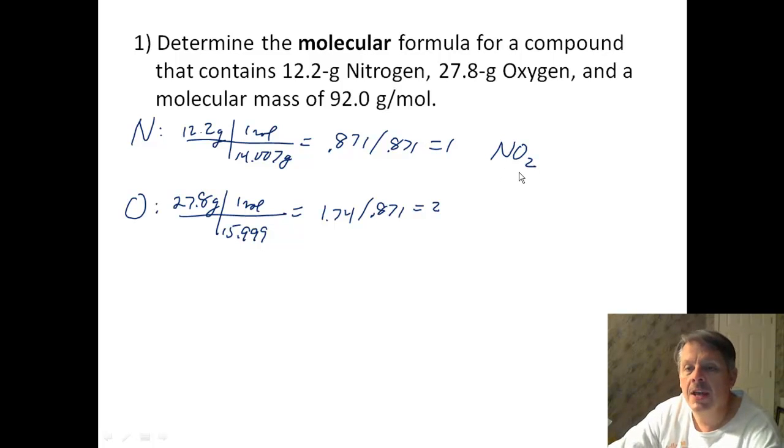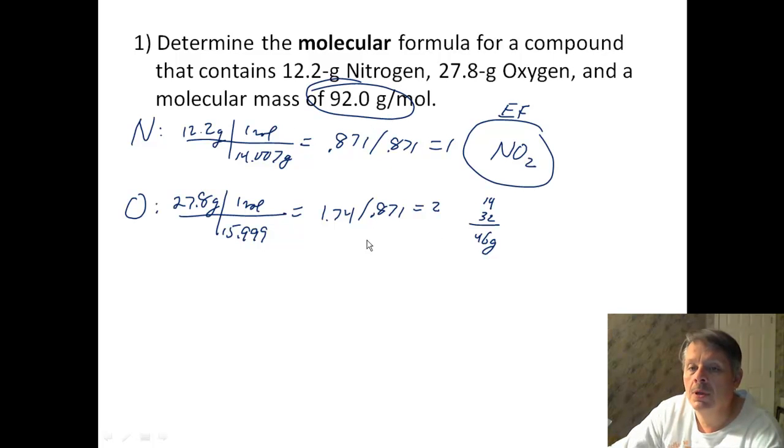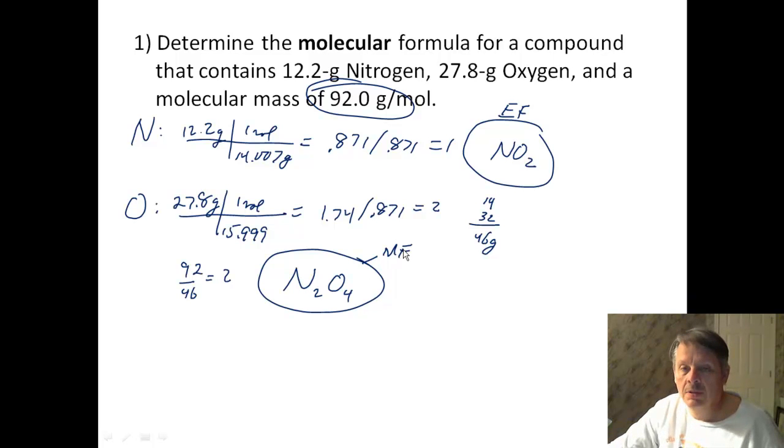So your empirical formula is NO2. All right. Well, how much does NO2 weigh? That's your empirical formula. Nitrogen's 14. Each of the oxygens is 16. So that's 32. So that entire thing is 46 grams. But notice what I want is I'll have 92 grams per mole. Well, 92 divided by 46 is equal to 2. So it's twice as big. So instead of being NO2, it's going to be N2O4. And that's my molecular formula. All right. Let's do a few more.